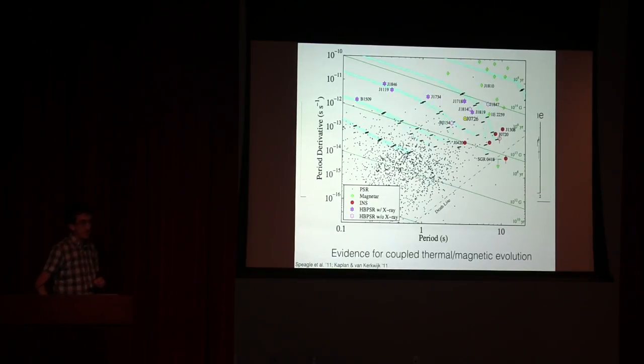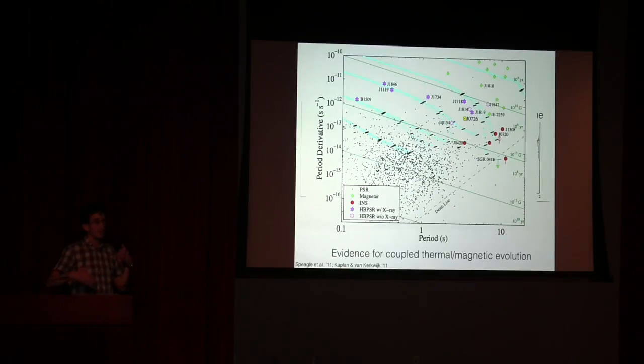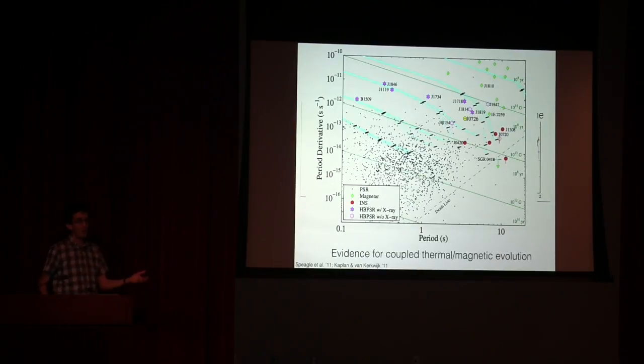Nonetheless, we think we have an understanding of what this population is showing us. This population is all those red circles on the right side there, and they seem to be objects where the rotational evolution is coupled with the thermal evolution. So you're seeing coupling between the energy lost to heating and the energy in the magnetic fields. The magnetic fields are decaying over the lifetimes of these objects, which is a few hundred thousand to a few million years.